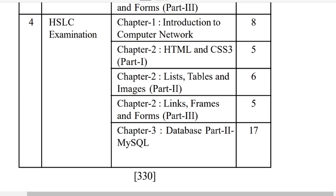Chapter 2 is 16 marks — Part 1 is 5 marks, Part 2 is 6 marks, Part 3 is 5 marks, so total 16. And MySQL is 17 marks. Chapter 2 and Chapter 3 marks are the maximum marks — 16 plus 17, so total 33 marks. In this chapter I am going to talk about half marks and 10 marks.